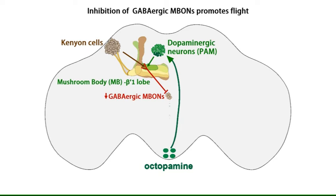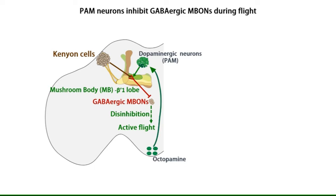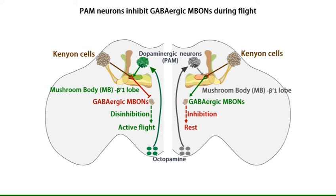Based on these findings, we propose that a decrease in GABA release from beta-prime-1 output neurons leads to disinhibition of their target cells. This disinhibition supports longer flight bouts. This study has identified a neural circuit where dopamine-modulated changes of synaptic activity in the mushroom body in real time helps maintain Drosophila in a flight state.